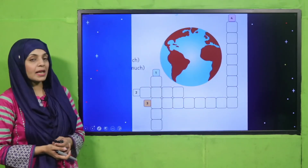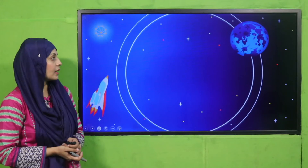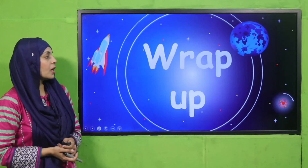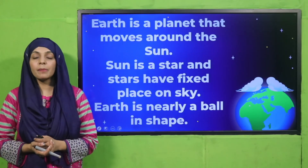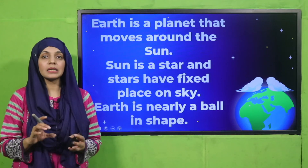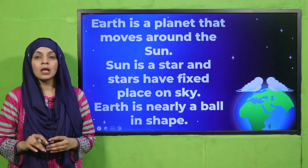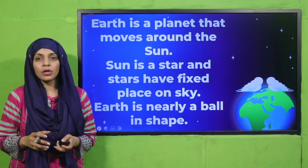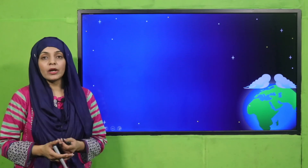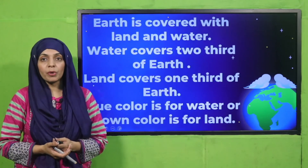The wrap-up of the lesson: in this lesson we have learned about the planet, the star, the shape of the earth, and what is present on earth — how much portion of land and water is present. I hope you have enjoyed this unit. Keep everybody around you safe, have a good day, thank you so much.